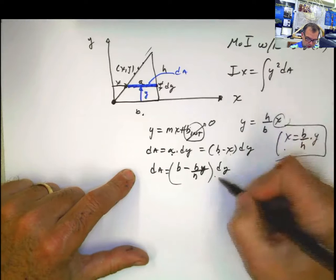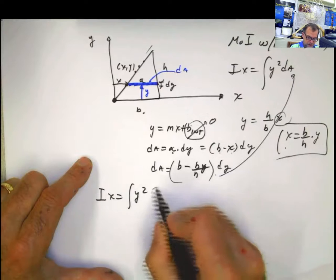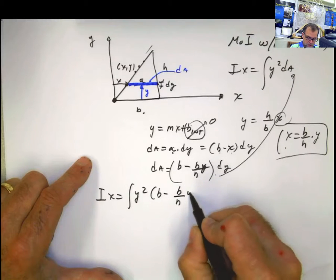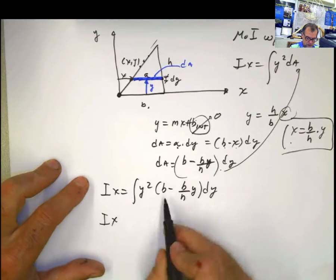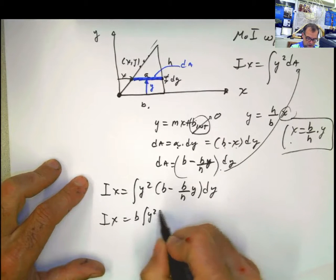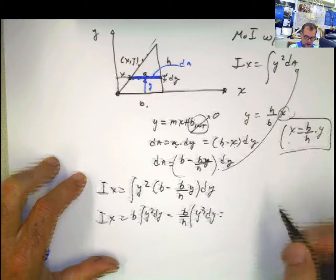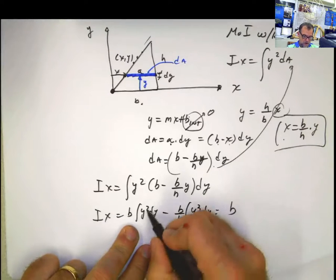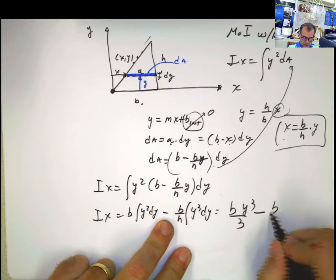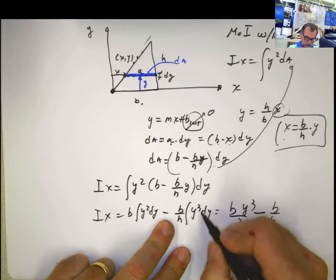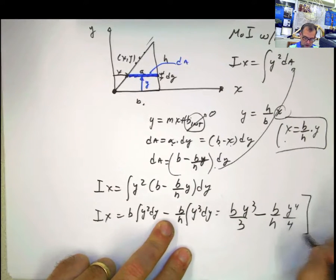Now I plug this into the equation. My Ix is y squared multiplied by b minus b over h times y dy. If I solve this integral, it's b integral of y squared dy minus b over h integral of y to the third dy. This equals b times y cubed divided by 3 minus b over h times y to the fourth divided by 4.